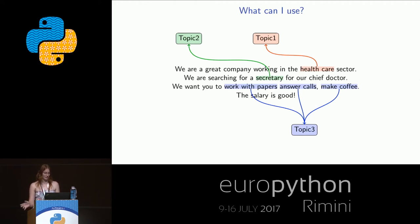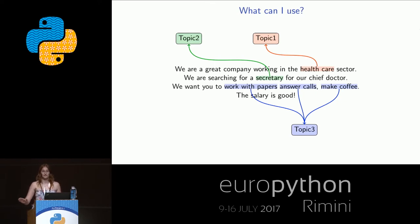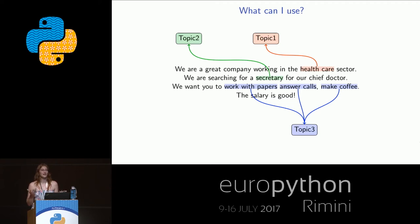You can see a very generic example — keywords for healthcare, secretary, and blue ones for working with papers. These are three different topics: industry, profession class or seniority level, and profession keywords. They overlap. It is just not possible to humanly define all the keywords for all the classes, for all the items in our database, and for all the languages we have — plus count synonyms in.